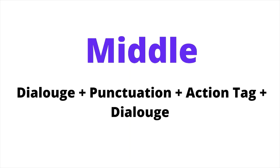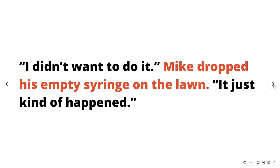So the structure is: dialogue, some form of punctuation — usually a comma or period — then an action tag, and then more dialogue. Here's an example: 'I didn't want to do it.' Mike dropped his empty syringe on the lawn. 'It just kind of happened.' You can see the action tag sandwiched in red font between those two lines of dialogue.